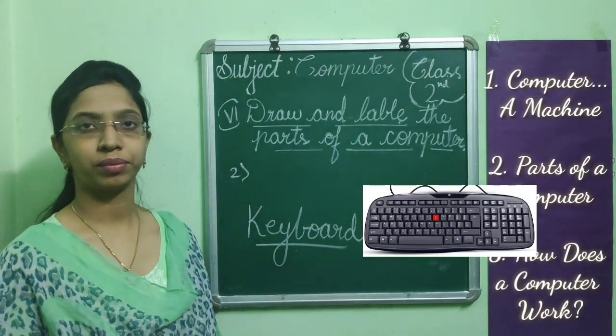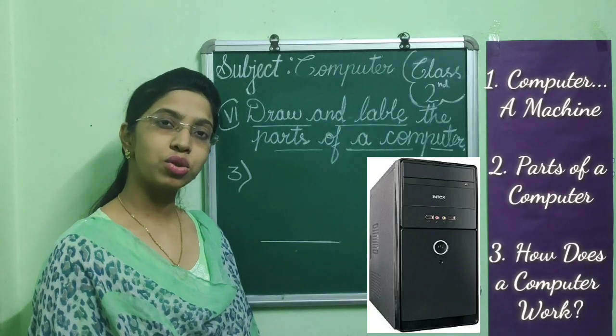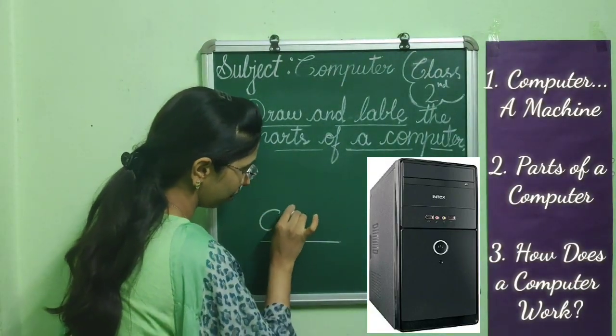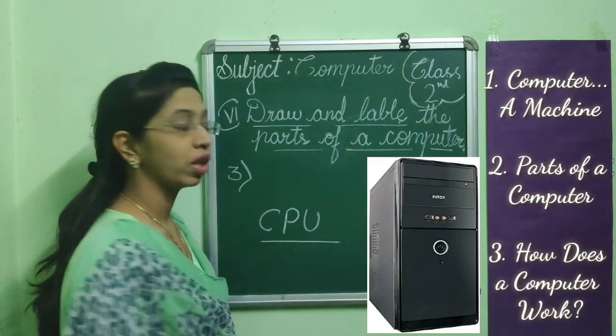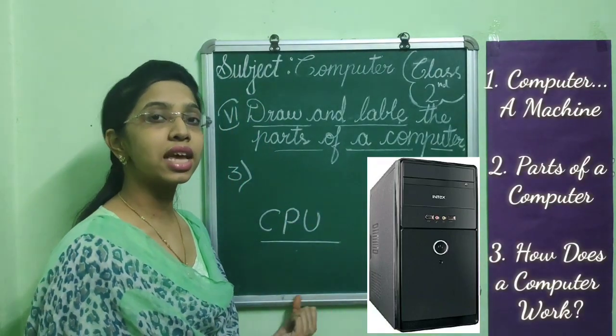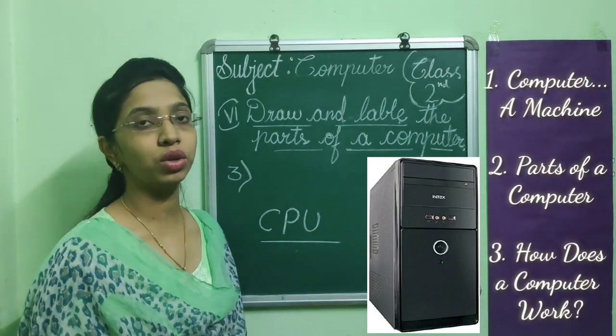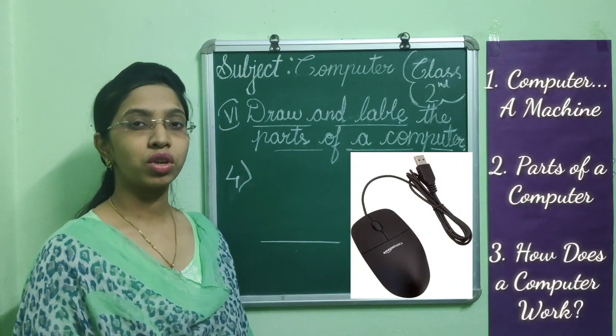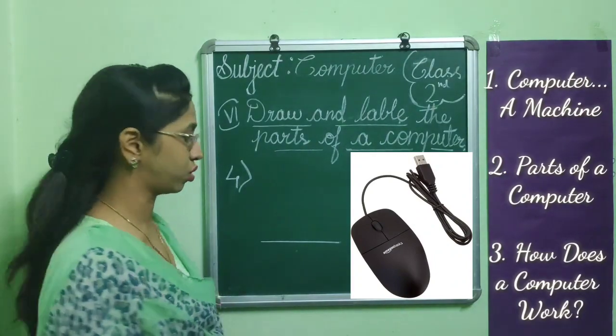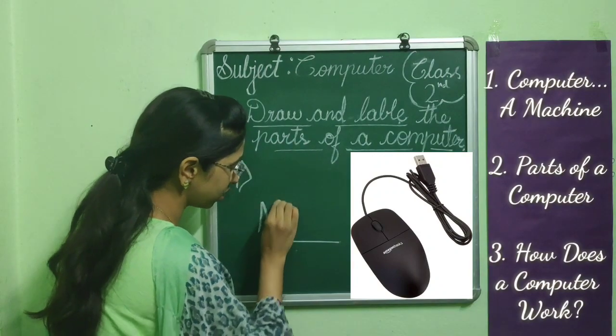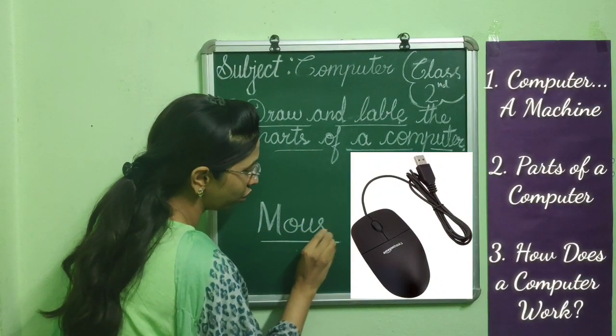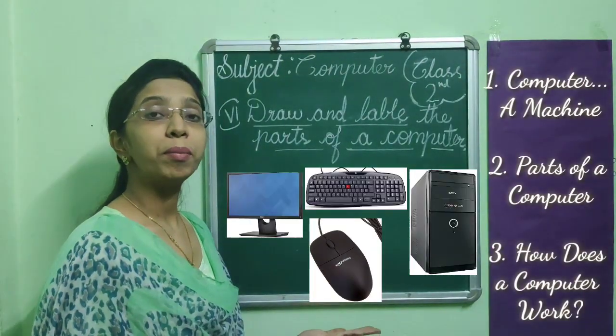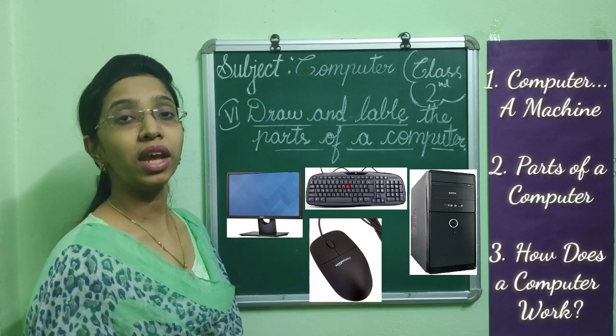This part of computer is known as CPU: C-P-U. The full form of CPU is Central Processing Unit. Fourth one, this part of computer is known as mouse: M-O-U-S-E. These four are the main parts of a computer.